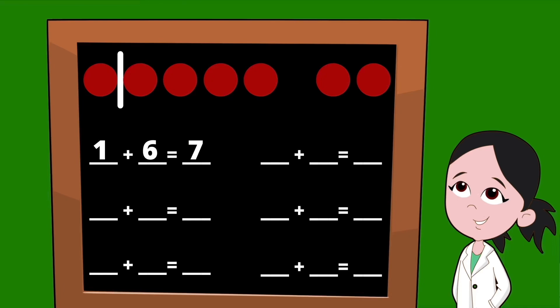Let's go ahead and slide that line one dot to the right, leaving two dots on the left. Our first partner is going to be the number two. On the right side of the line, how many dots are left? That's right, five dots. So our other partner is the number five. Two plus five equals seven.